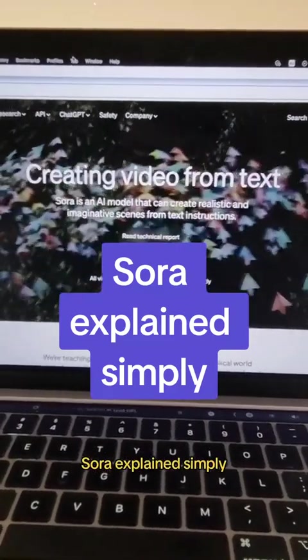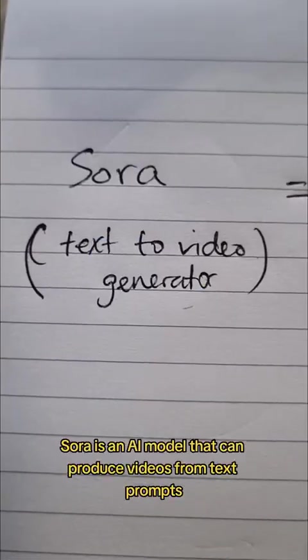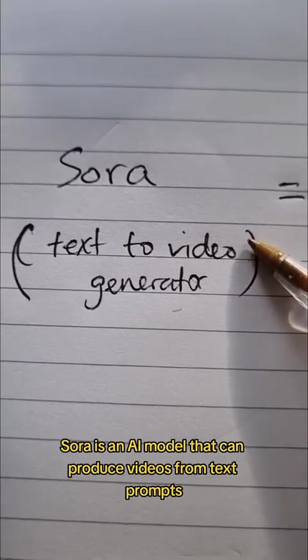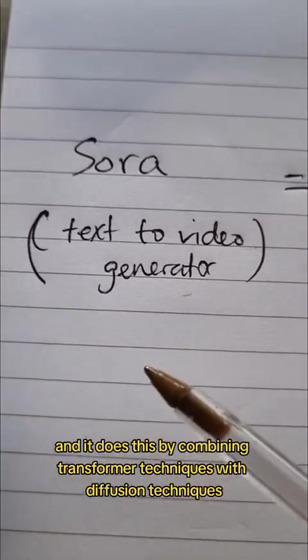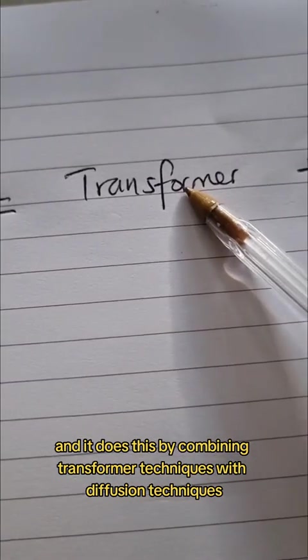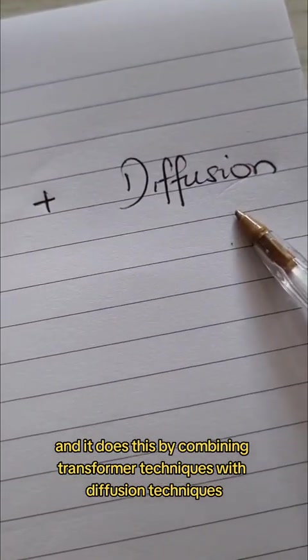Sora explained simply. Sora is an AI model that can produce videos from text prompts, and it does this by combining transformer techniques with diffusion techniques.